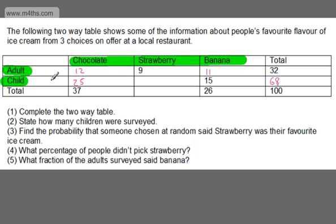Now I can fill out the children's totals. 15 and 25 is 40, and 40 from 68 gives me 28 — so 28 children chose strawberry. Checking: 9 and 28 is 37, and 37 and 26 is 100. Verifying the columns: 12 and 25 is 37; 9 and 28 is 37; 11 and 15 is 26; 32 and 68 is 100; and 12, 9 and 11 is 32.